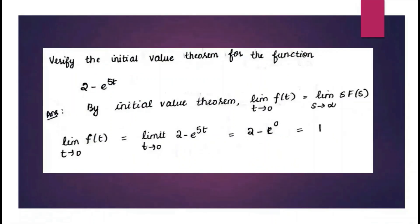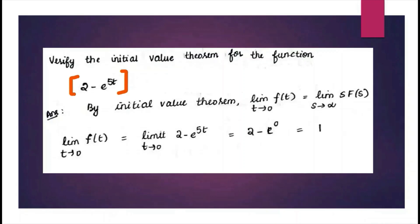Next, let us do a problem based on this. You have been asked to verify the initial value theorem for the function given in the t-domain, that is f(t) = 2 − e^(5t). So write the expression for the initial value theorem: the limit of f(t) as t tends to 0 equals the limit of s·F(s) as s tends to infinity. First, let us find the LHS.